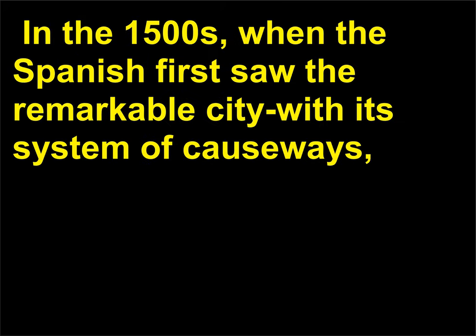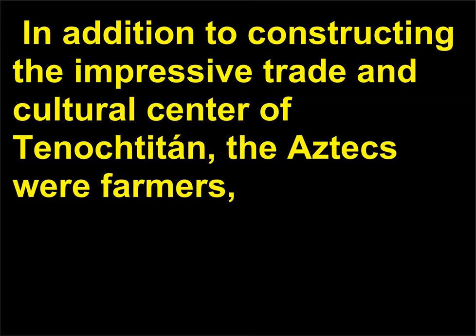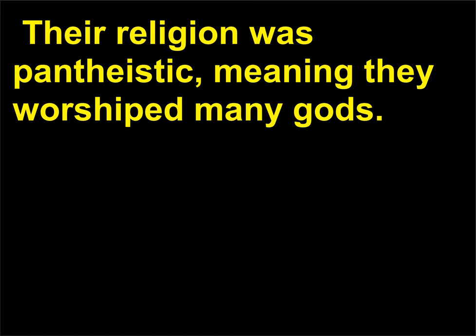In the 1500s, when the Spanish first saw the remarkable city with its system of causeways, canals, bridges, and aqueducts, they called it the Venice of the New World. In addition to constructing the impressive trade and cultural center of Tenochtitlan, the Aztecs were farmers, astronomers, mathematicians, and historians who recorded the events of their civilization. Their religion was pantheistic, meaning they worshipped many gods.